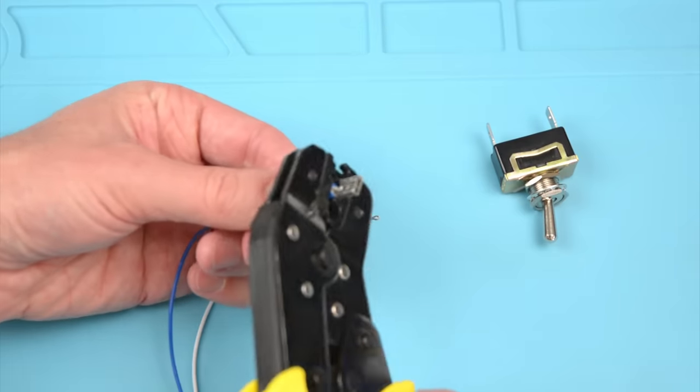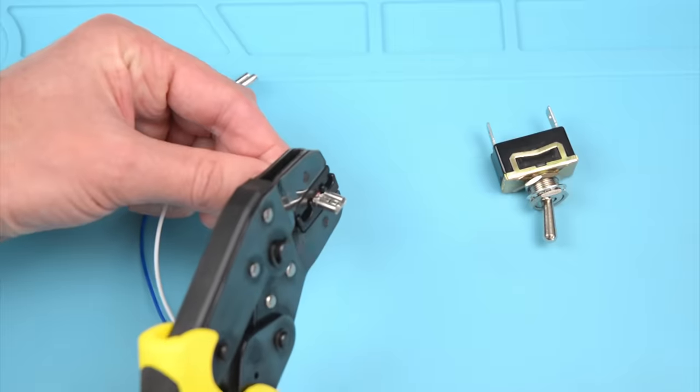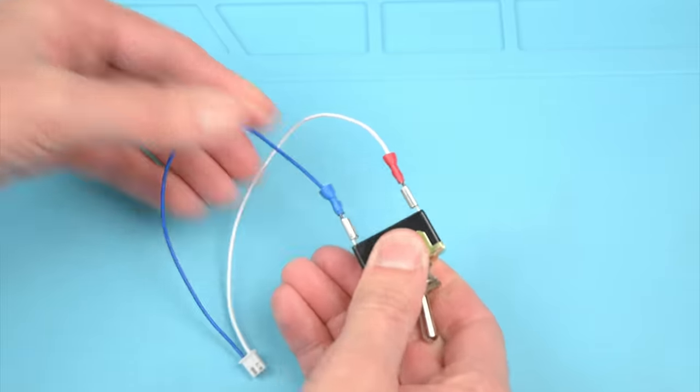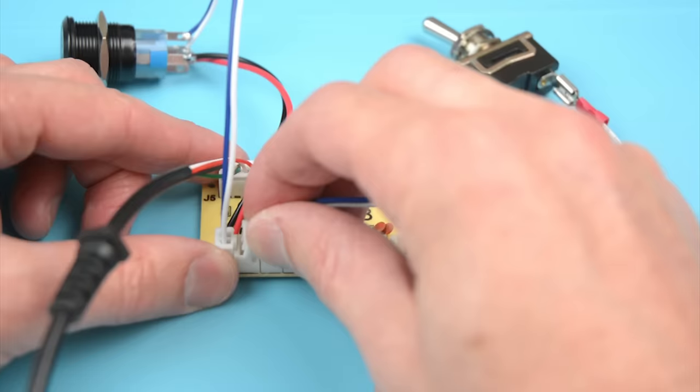To add a momentary toggle switch, solder the ends of the wires or crimp on new terminals and connect. Then simply plug the completed wiring into a free spot on the joystick encoder.